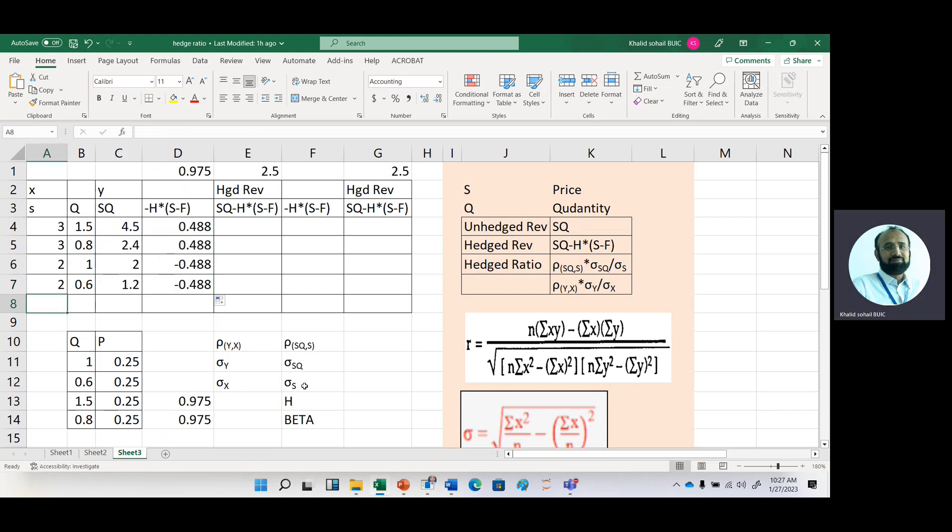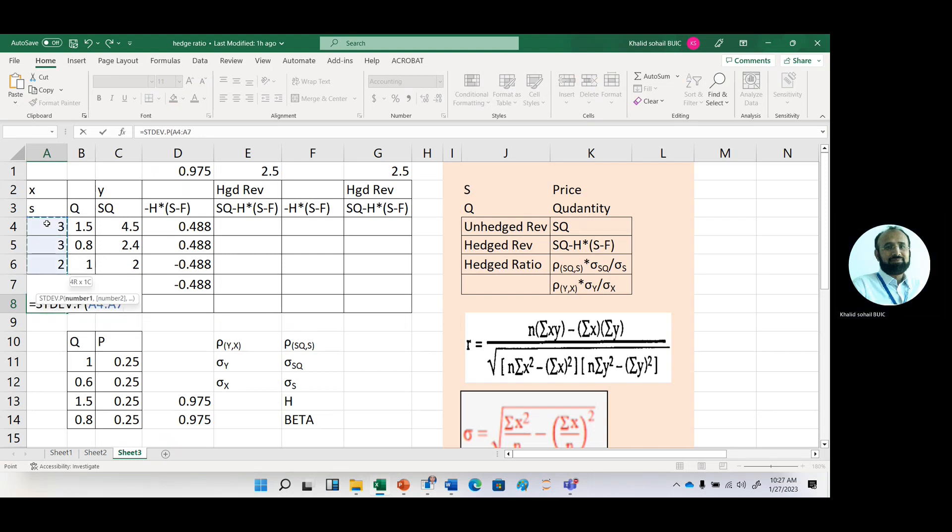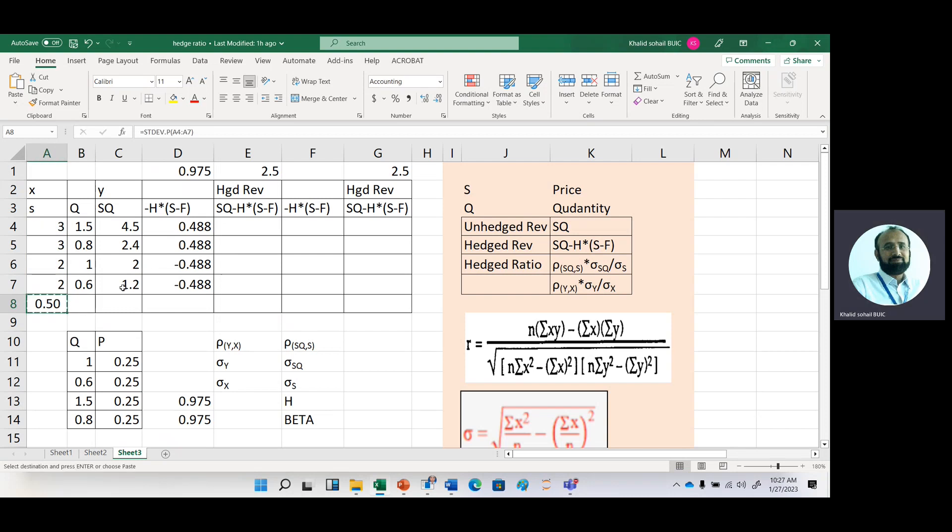Now to get hedge ratio, we need standardization. So we will calculate standardization formula for population. And we need standardization of this SQ as well. So first we calculate this hedge revenue.